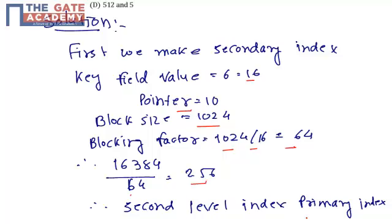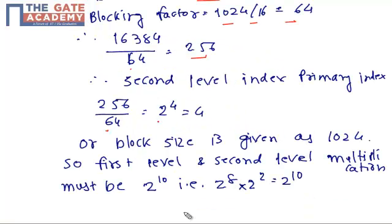For the second level index, 256 divided by 64 equals 2^4, which is 4 blocks.